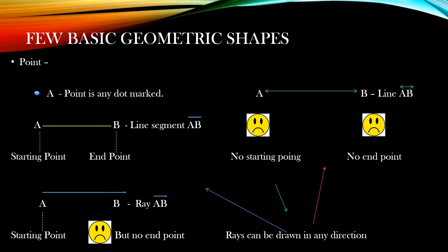Next we will see the line segment. What is the line segment? A line segment is nothing but the collection of points — the collection of limited points. Here you can see the line segment AB. A is called the starting point of the line segment whereas B is called the end point of the line segment. A line segment has a definite measurement, a definite length. It has a starting point and an end point. It is not extending.